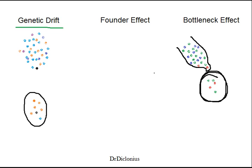Just as in the genetic drift example, this bottleneck effect population will reproduce, and thus these alleles will be in the new population. The founder effect is also a general concept that these small populations, since they have less variation, are going to be subject to genetic drift, and these smaller populations will then reproduce accordingly.